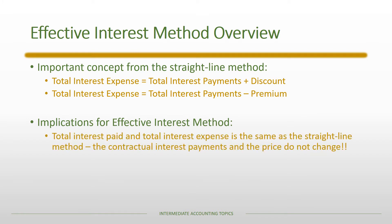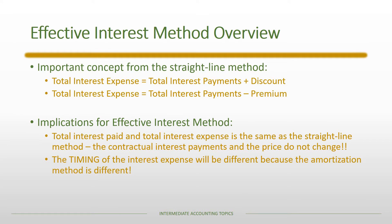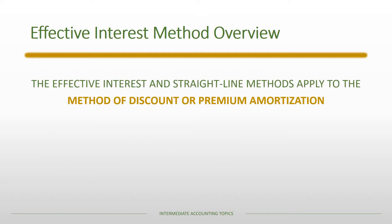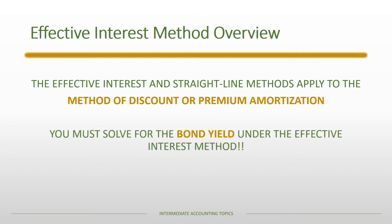The total amount of interest paid and the total interest expense is the same under both methods — there's no difference in those two totals. The contractual interest payments and the price don't change. However, the timing of the interest expense will be different because the amortization method is different. Both the effective interest and straight-line methods are methods used to amortize the discount or premium.